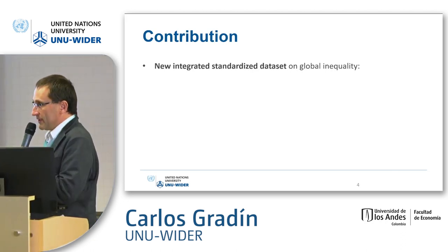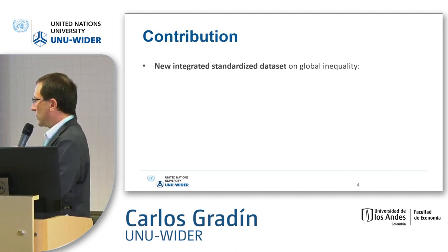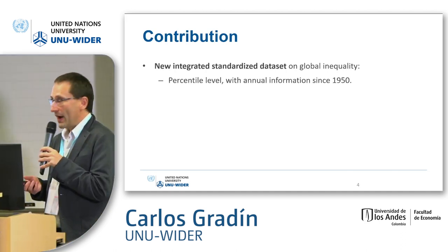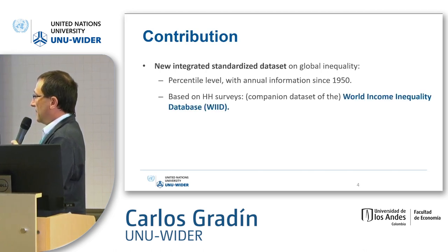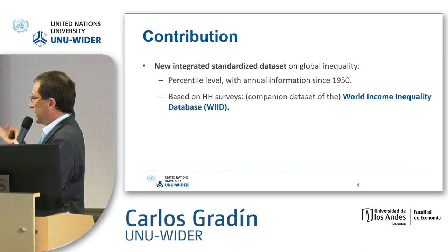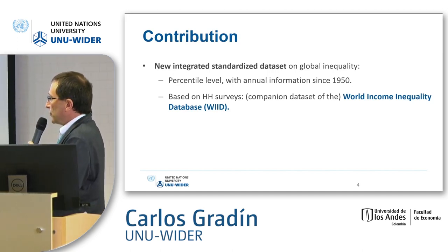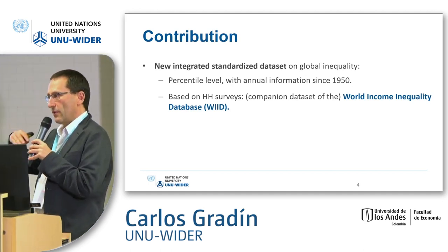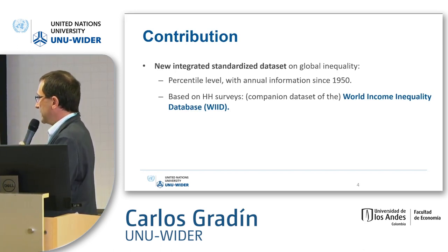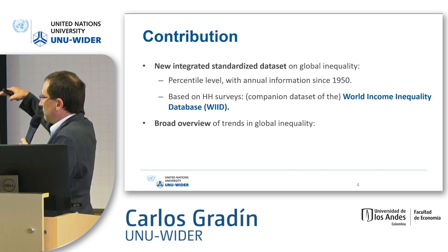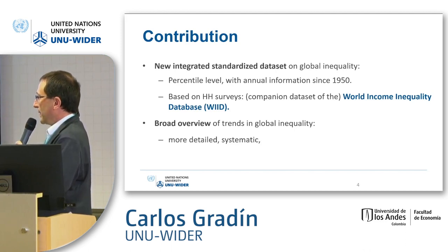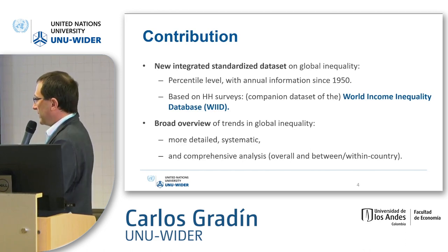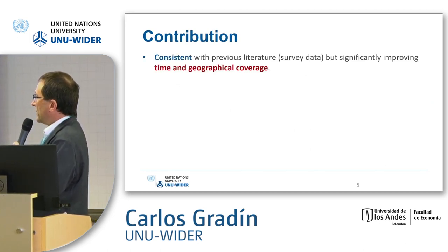The main contribution of this paper is to use a new integrated standardized dataset — the WIID (World Income Inequality Database). This dataset includes percentile-level information since 1950 for each country, then aggregated to construct global inequality. It is based on household surveys, so there is no correction for top incomes in the baseline, though robustness analyses include some corrections. The goal is to provide a broad, detailed, and systematic overview of trends in global inequality — more comprehensive than most prior literature — looking at overall inequality and inequality between and within countries.